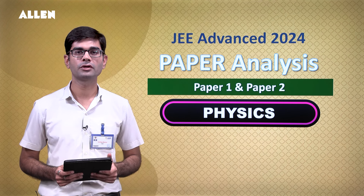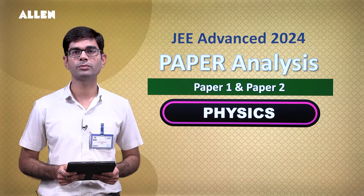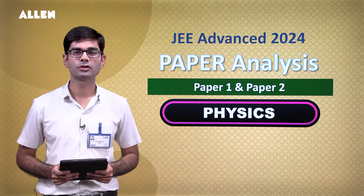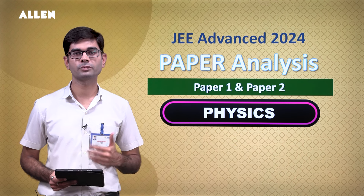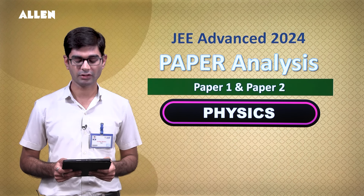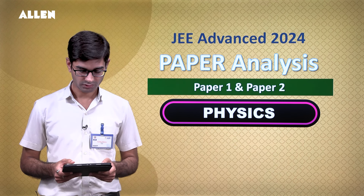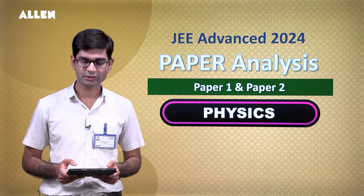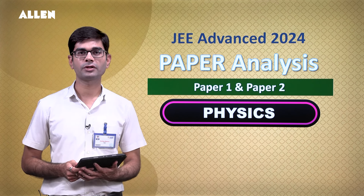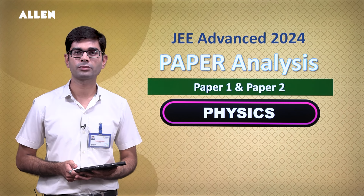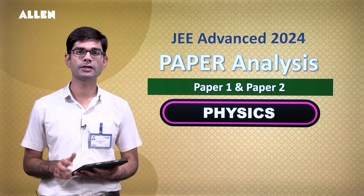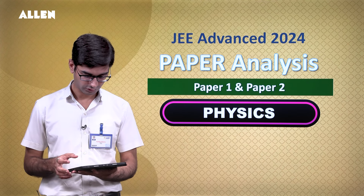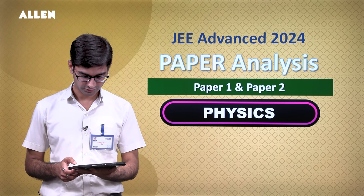Conceptually it was not challenging, but in paper 2 you got a lengthy paper, so there you had to work a bit on speed and accuracy. 12th class topics had high weightage overall — around 65% — and electrodynamics had high weightage.